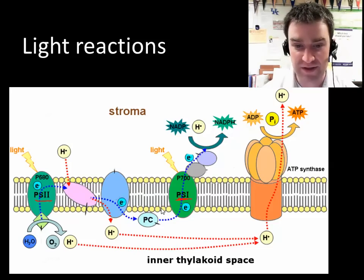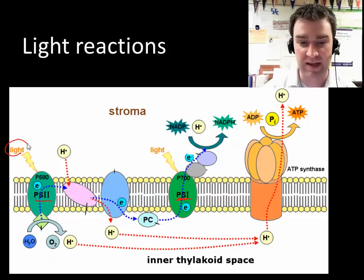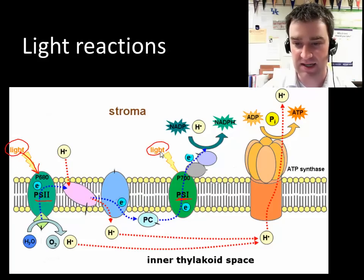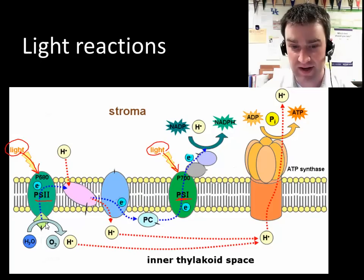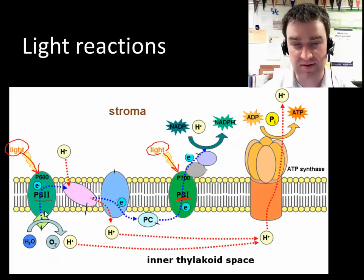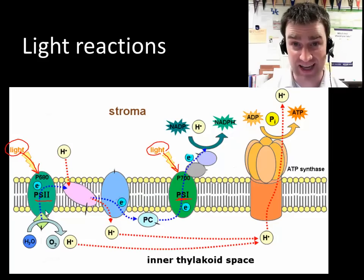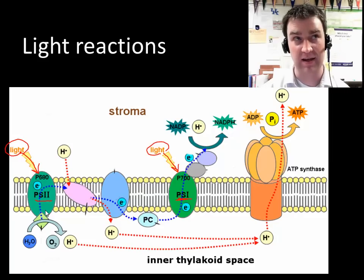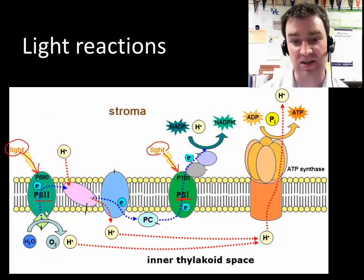I'm going to start over here at the initial photosystem. Notice that both of them can capture light energy — when light energy comes in, both photosystems can capture it with the pigments embedded inside. When either photosystem absorbs light energy and the pigments have electrons, they can absorb that light energy and boost those electrons to high energy states.